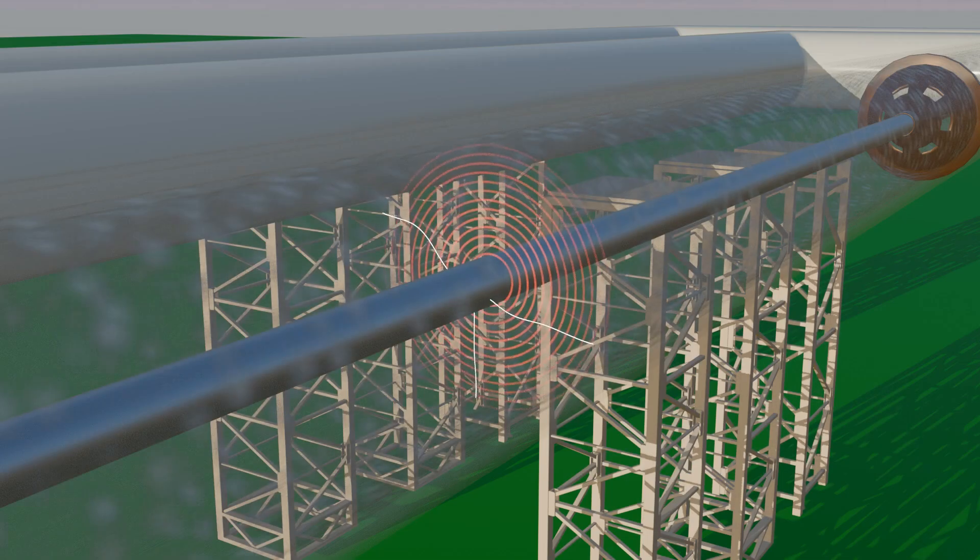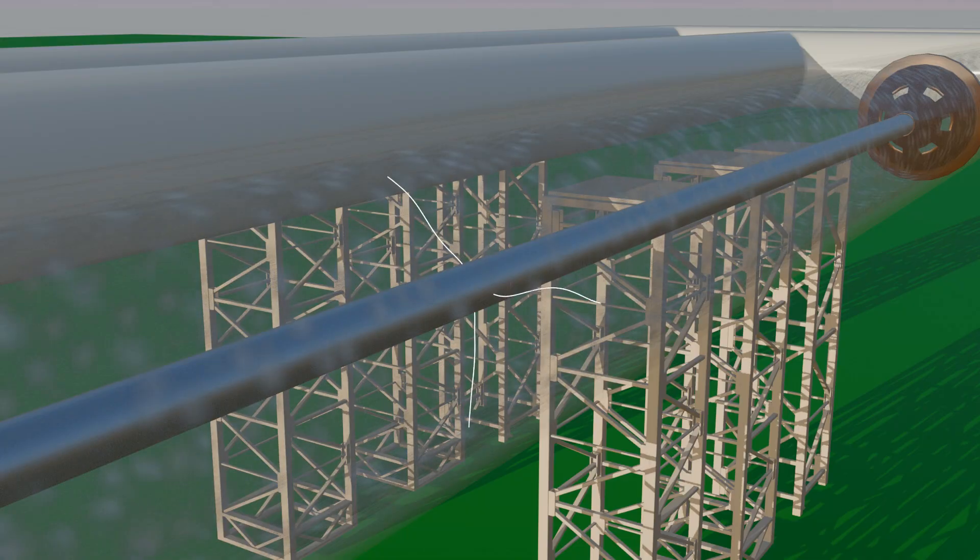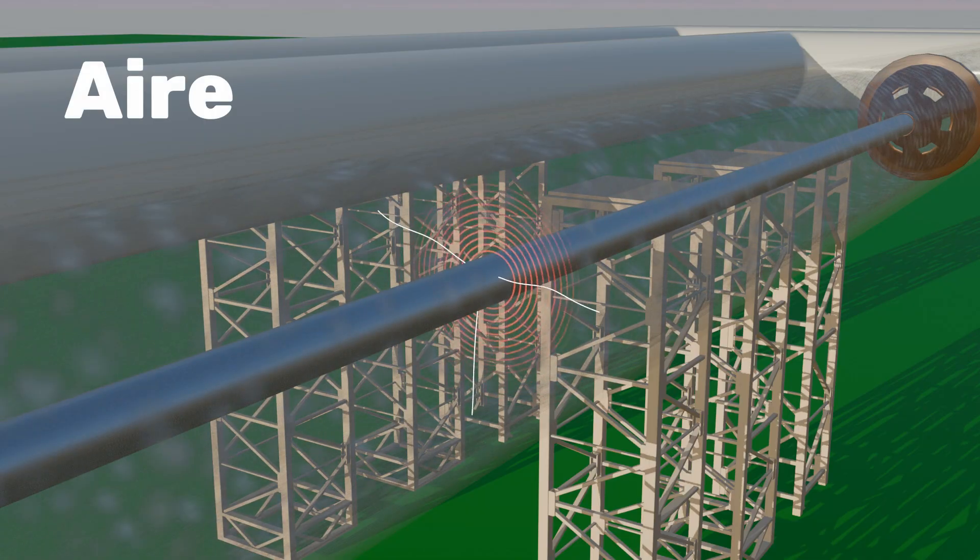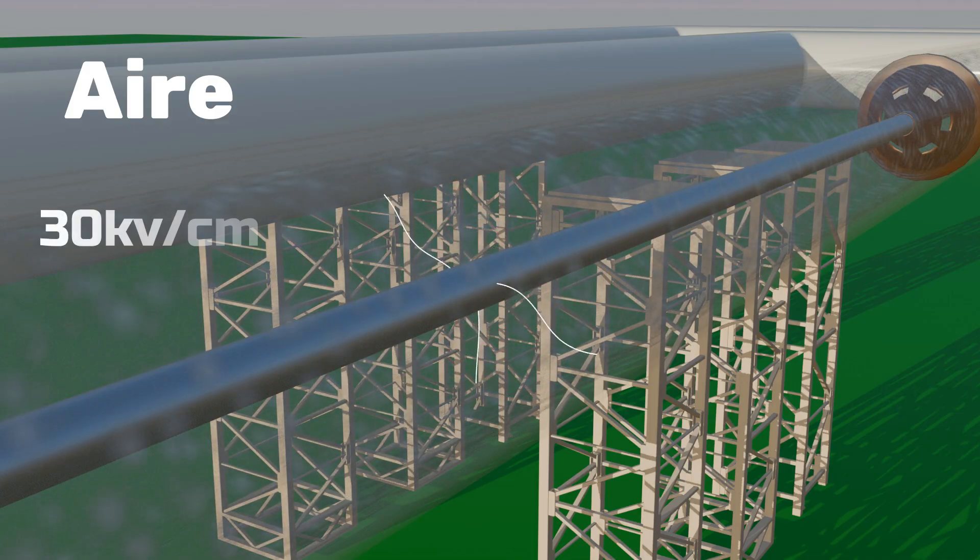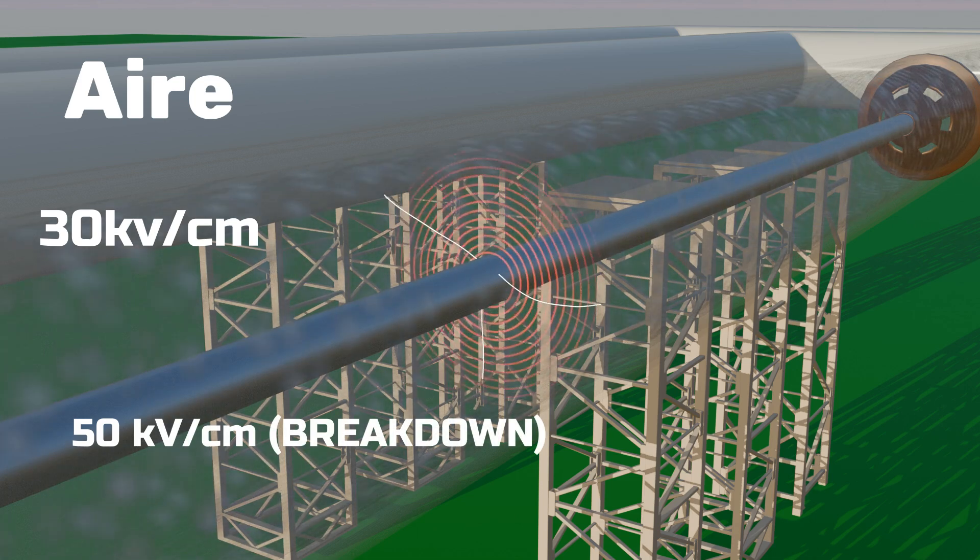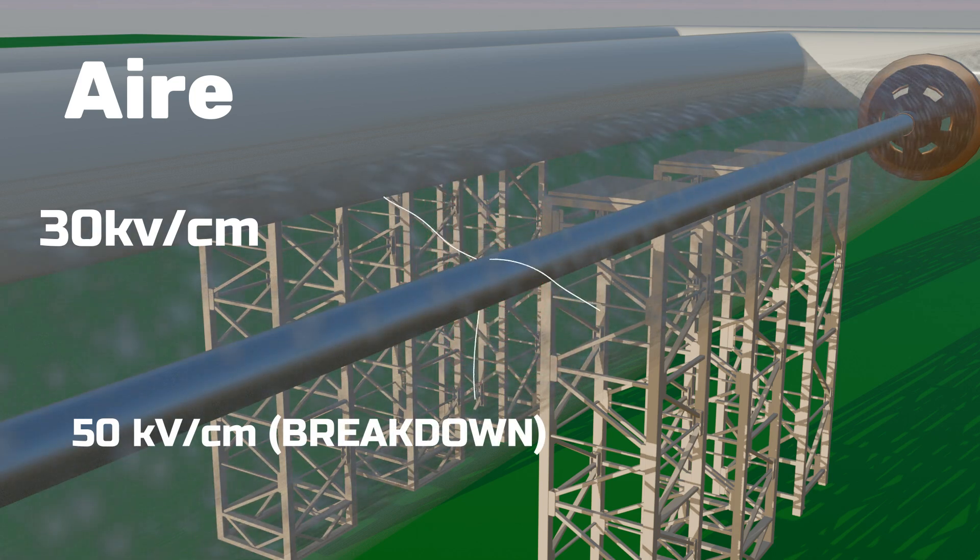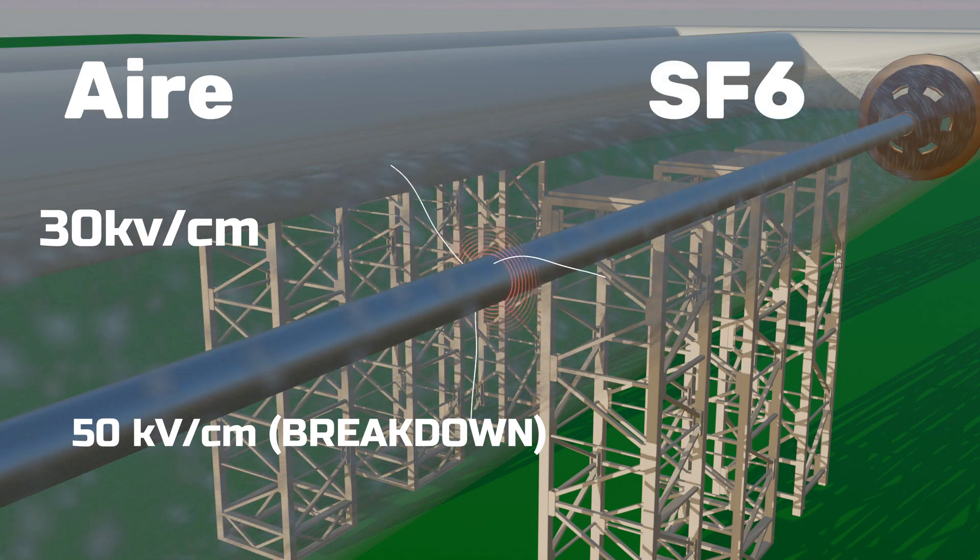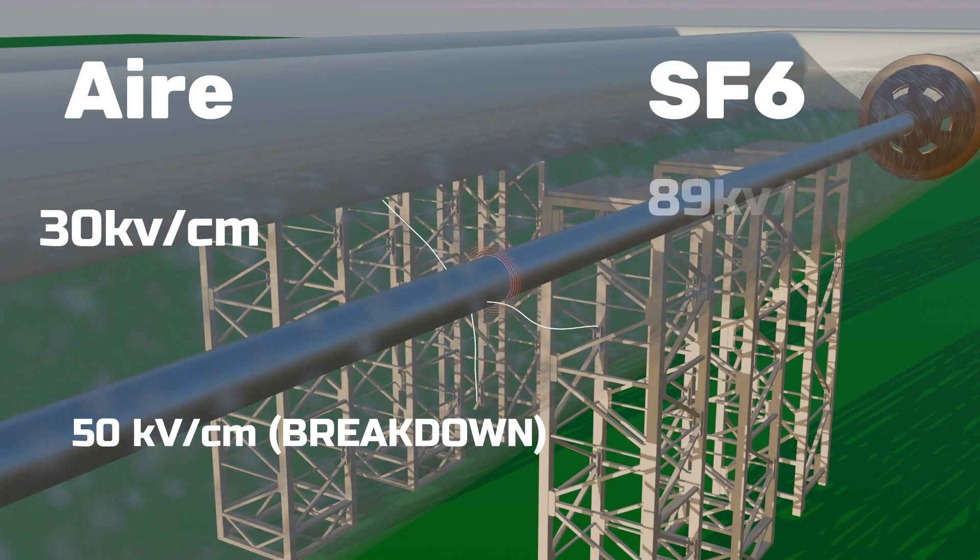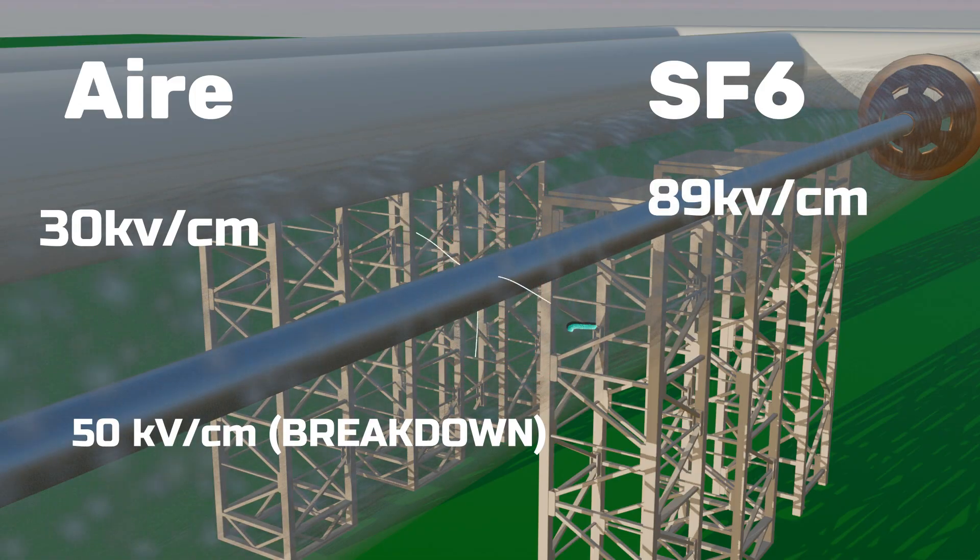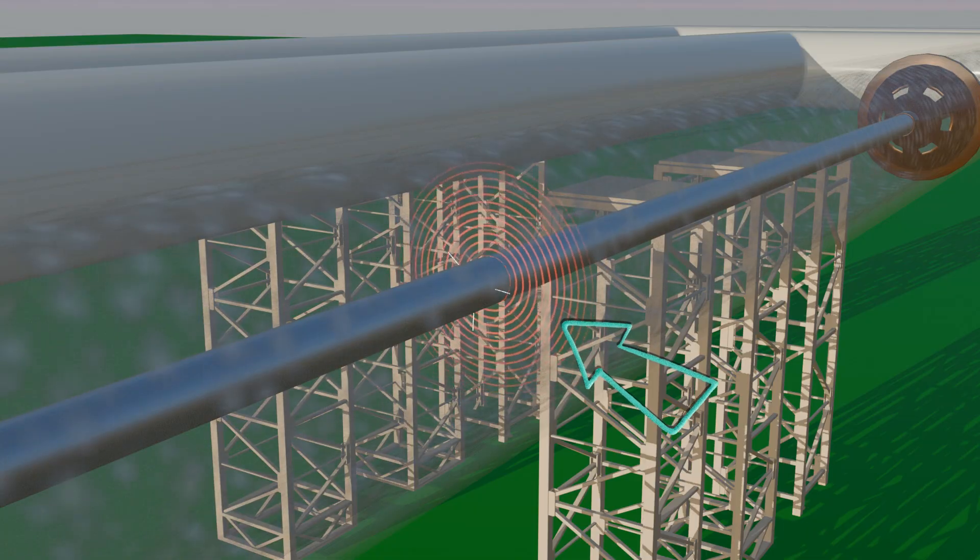But here, the SF6 gas filled inside has a dielectric strength almost three times higher than that of air. Let us simplify this: air has a dielectric strength of about 30 kV per centimeter, so if we apply around 50 kV per centimeter, air starts behaving like a conductor. In comparison, SF6 gas has a dielectric strength of about 89 kV per centimeter, nearly three times higher. As a result, its particles become less ionized, reducing the chances of breakdown.